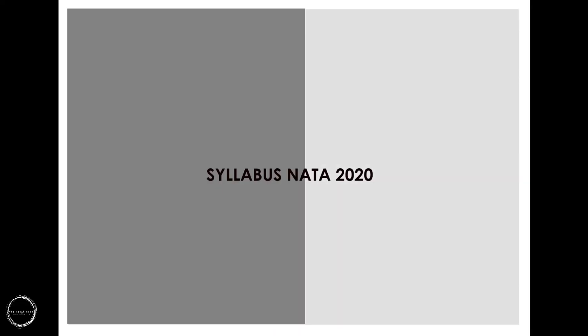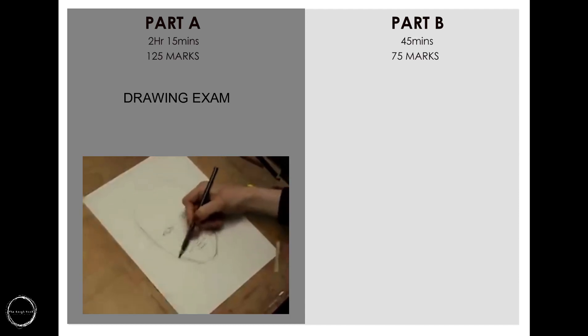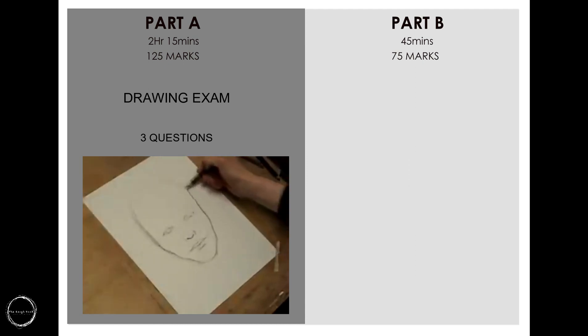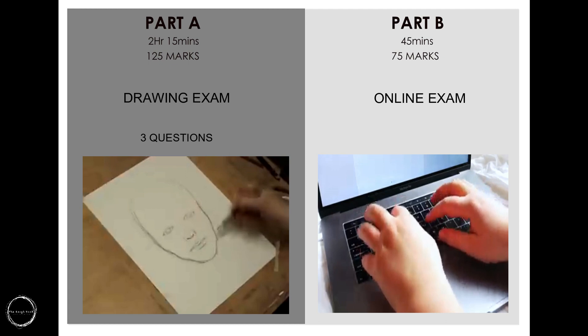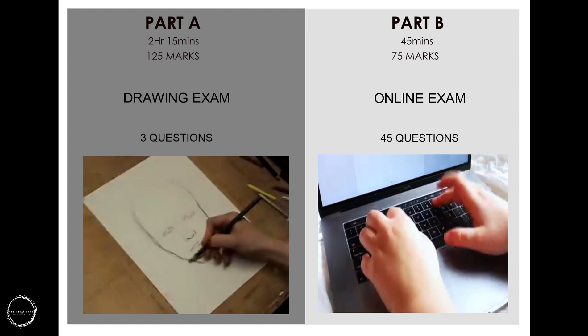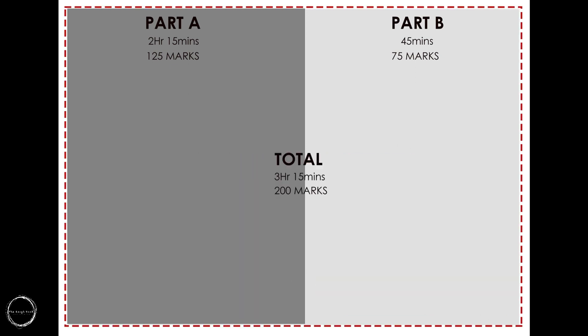Now let's talk about the structure of the syllabus. The paper is divided into two parts. Part A consists of the drawing exam, which is 125 marks with a duration of 2 hours 15 minutes and has 3 questions. Part B is an online exam consisting of 45 questions at 1.5 marks each, totalling 75 marks with a duration of 45 minutes, bringing the total to 200 marks in a duration of 3 hours. In the next video, we will talk about the syllabus in detail, the distribution of marks and how to crack Part A.